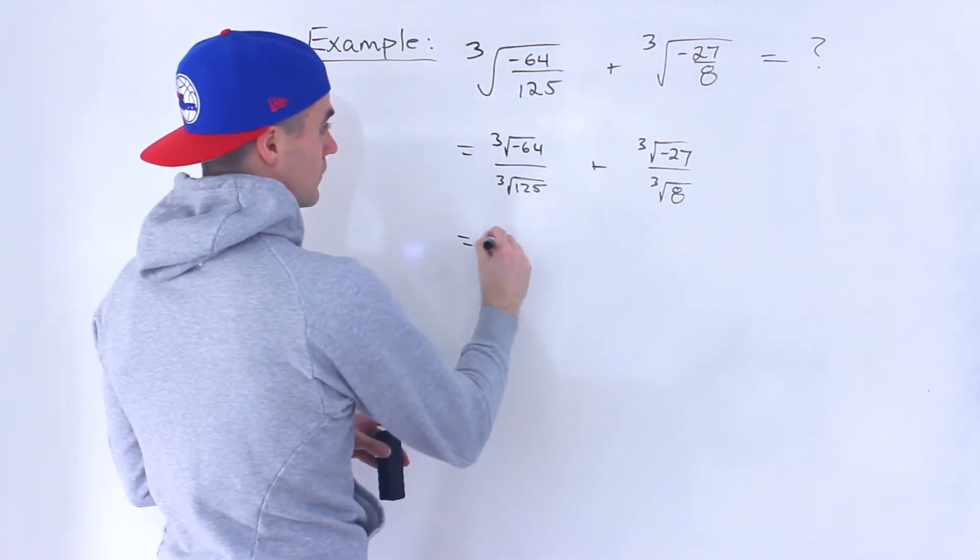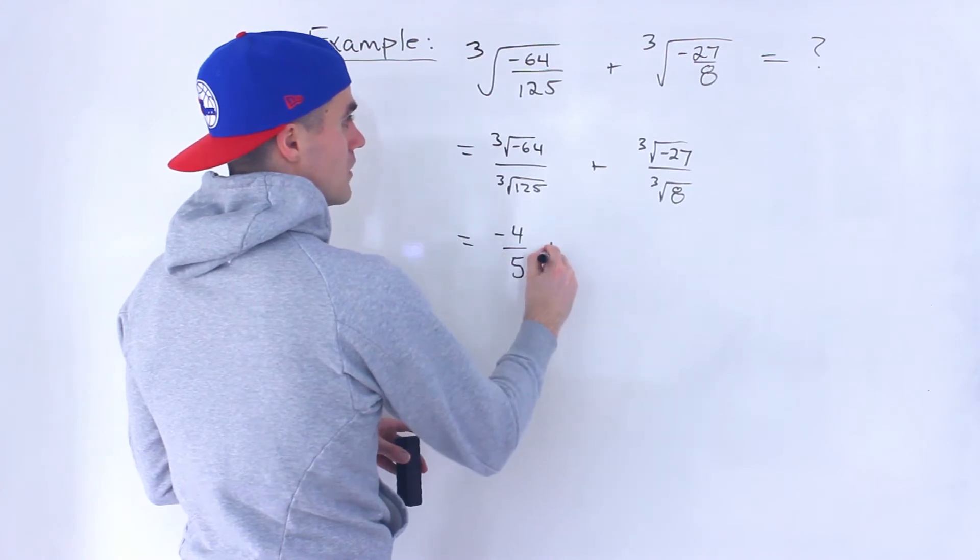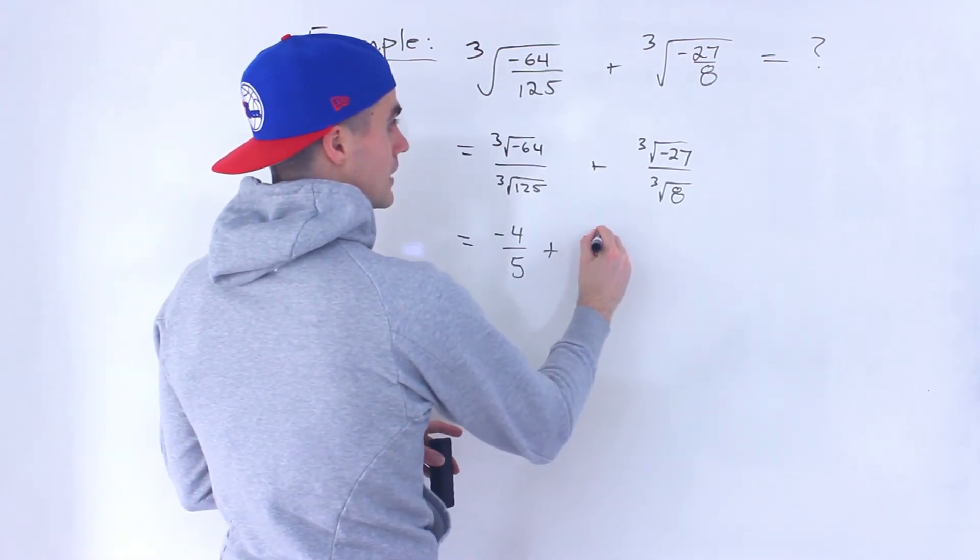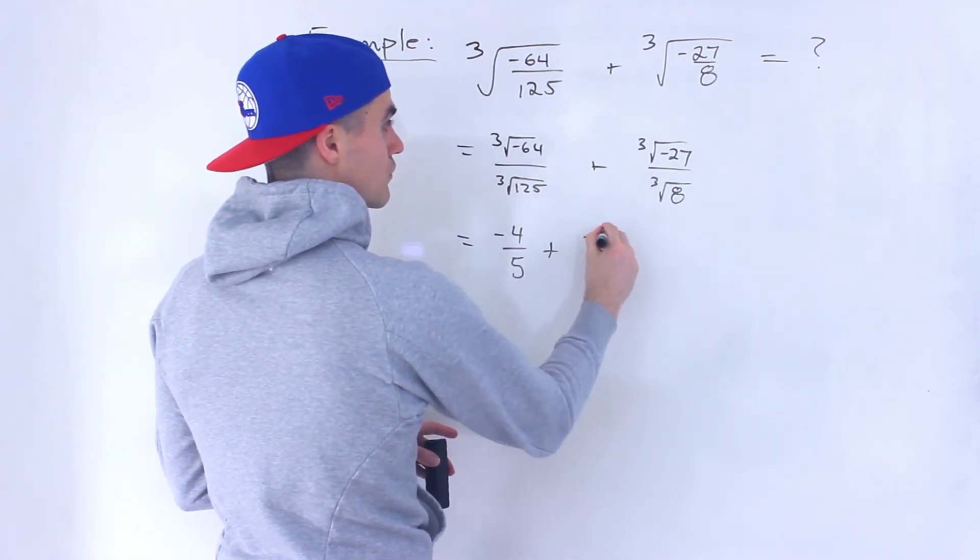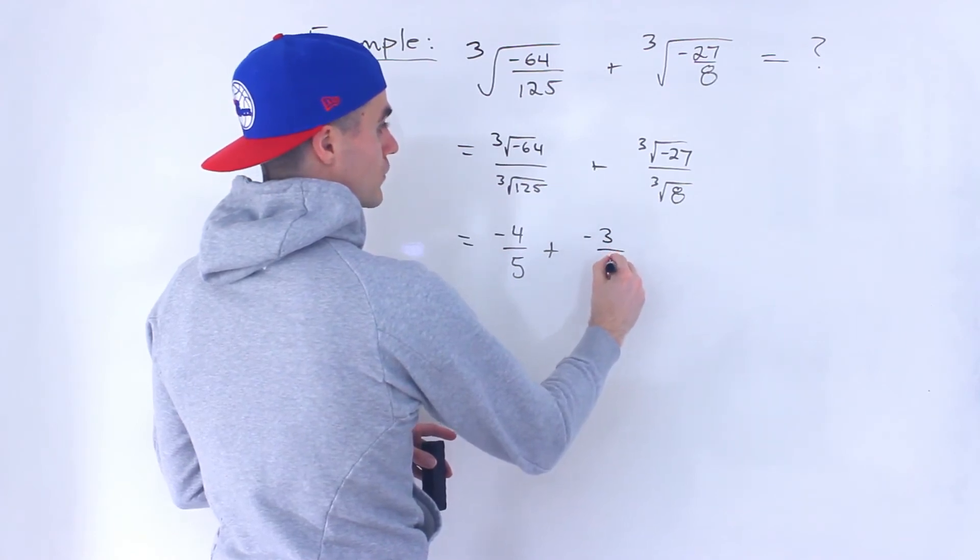So here we would end up with negative 4 over 5 plus negative 3 over 2, since the third root of 8 is 2.